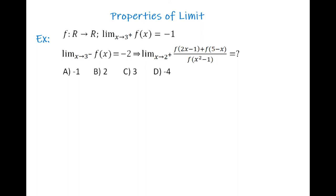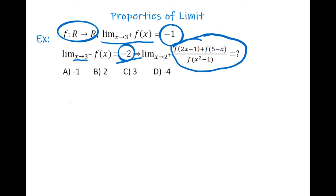We have a new question. f is a function from real numbers to real numbers. The limit of f(x) as x→3 from the right is −1, and the limit of f(x) as x→3 from the left is −2. When x approaches 2 from the right, find the value of [f(2x−1) + f(5−x)] / f(x²−1). I included this question because it's a different kind.